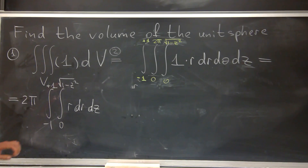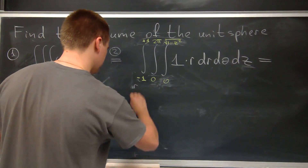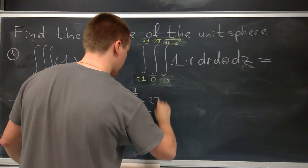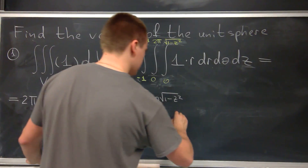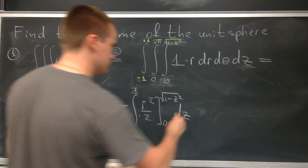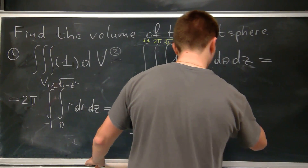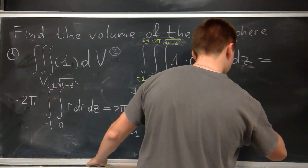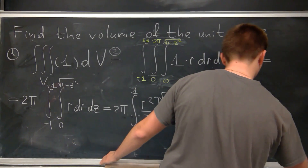Next I evaluate the inner integral. The antiderivative of r is r²/2, evaluated from 0 to √(1 - z²). Plugging in the bounds and multiplying by 2π gives 2π times the integral from -1 to 1 of (1 - z²)/2 dz. The factor of 2 in the denominator will cancel with the 2 from 2π.